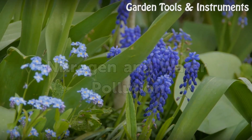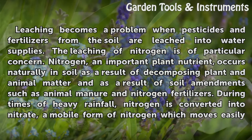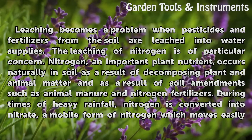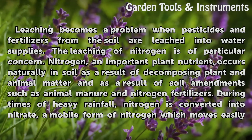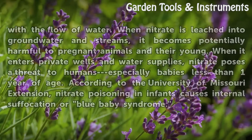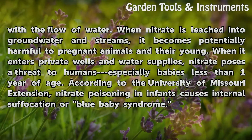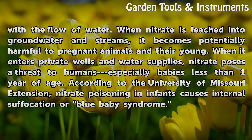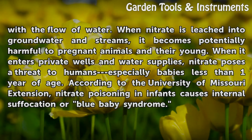Leaching becomes a problem when pesticides and fertilizers from the soil are leached into water supplies. The leaching of nitrogen is of particular concern. Nitrogen, an important plant nutrient, occurs naturally in soil as a result of decomposing plant and animal matter and as a result of soil amendments such as animal manure and nitrogen fertilizers. During times of heavy rainfall, nitrogen is converted into nitrate, a mobile form of nitrogen which moves easily with the flow of water. When nitrate is leached into groundwater and streams, it becomes potentially harmful to pregnant animals and their young. When it enters private wells and water supplies, nitrate poses a threat to humans, especially babies less than one year of age. According to the University of Missouri Extension, nitrate poisoning in infants causes internal suffocation or blue baby syndrome.